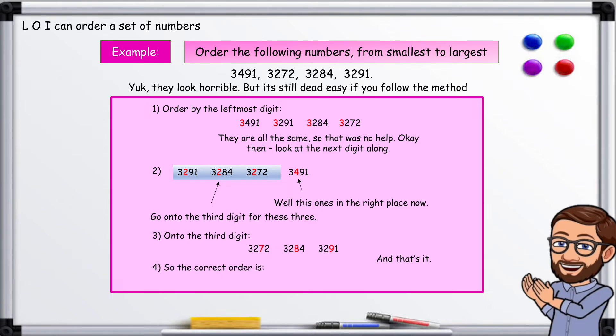So the correct order is 3,272, 3,284, 3,291, and 3,491.